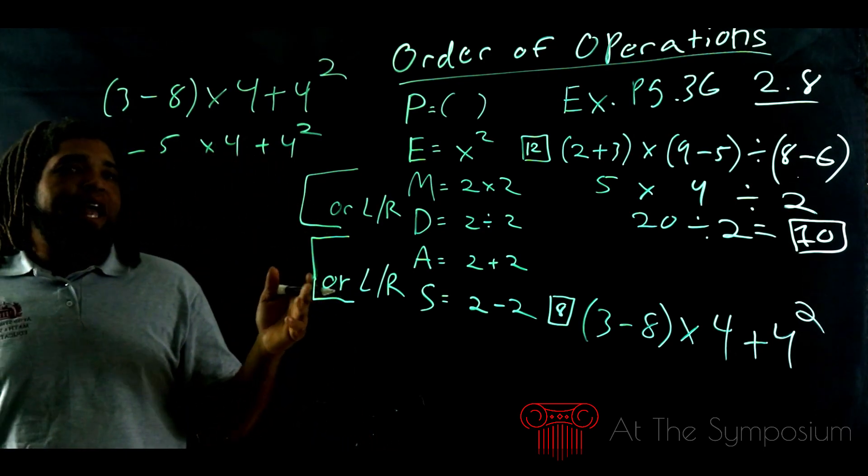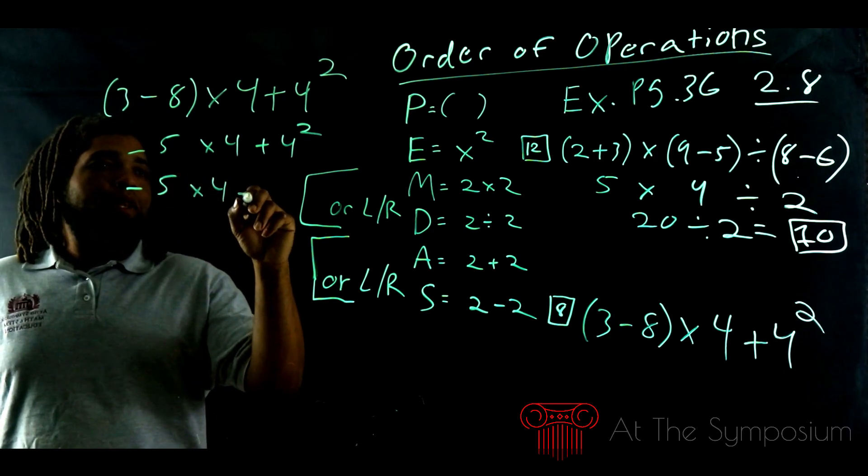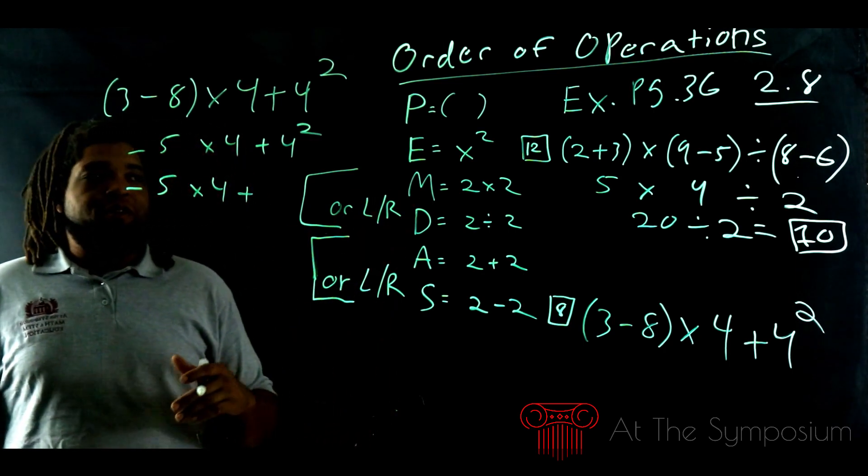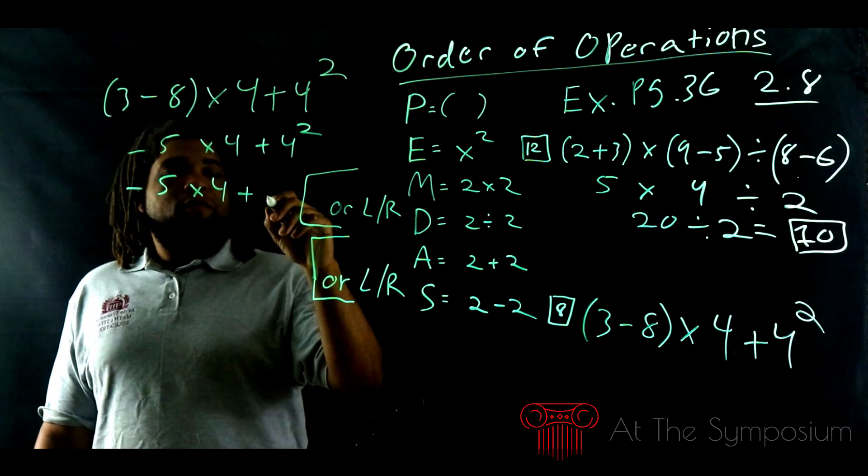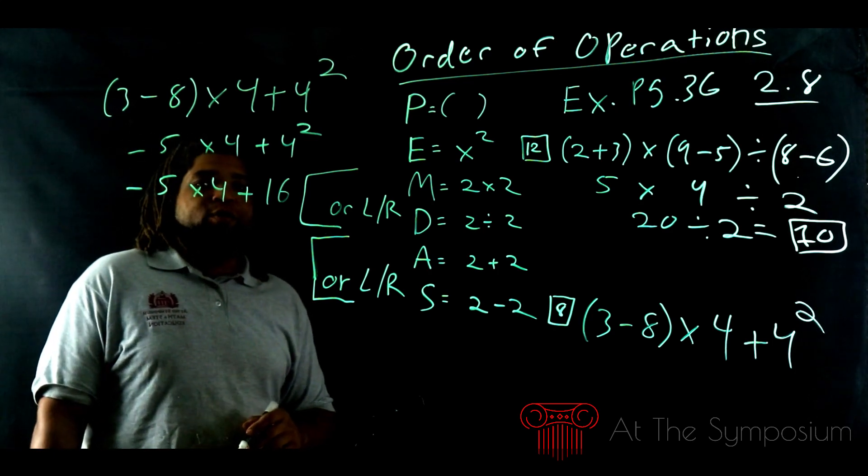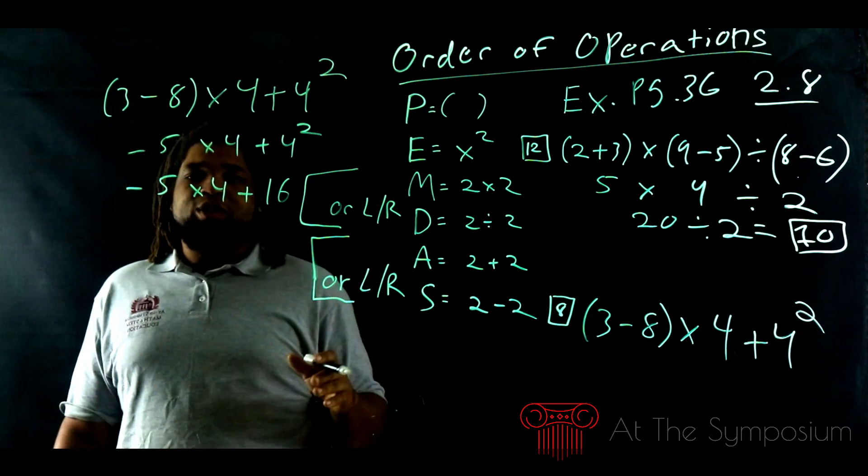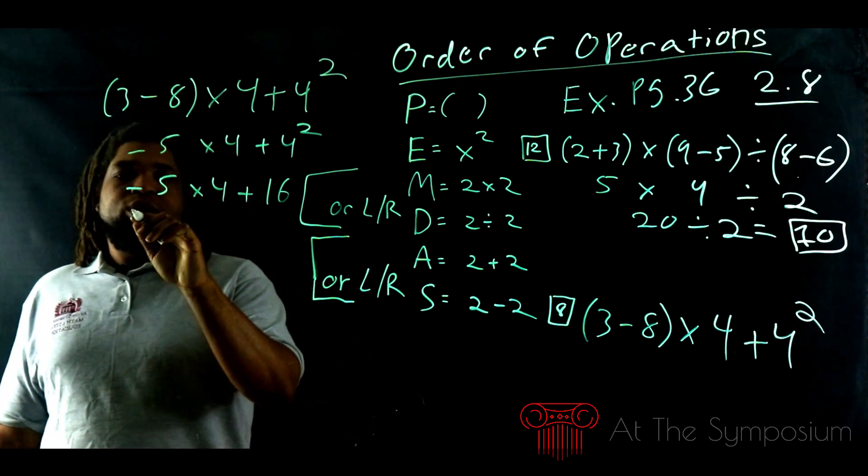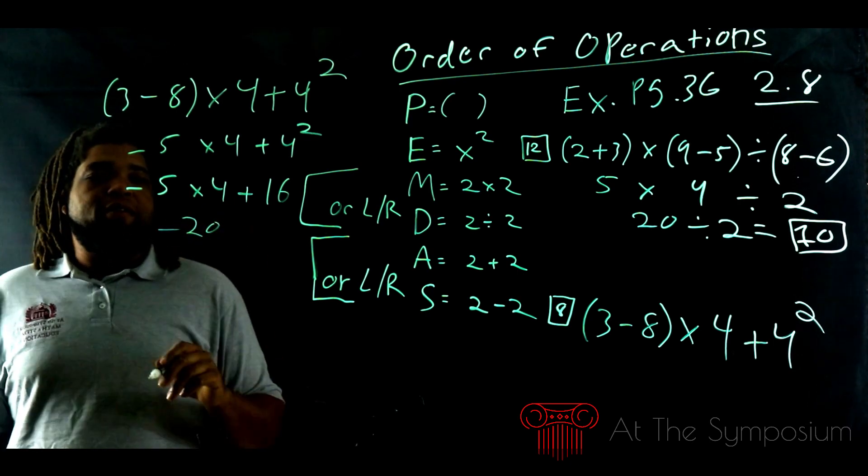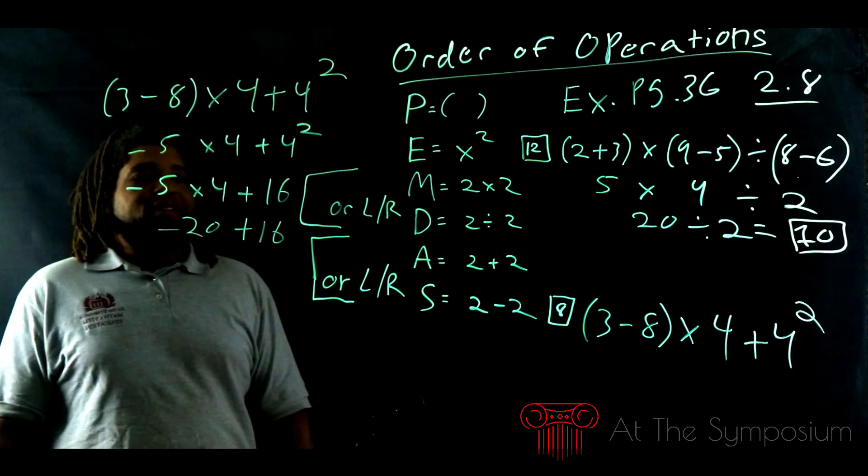We happen to have an exponent in this problem. We didn't have one in the last one, but we do now. So we're going to do negative 5 times 4 plus what's 4 to the fourth. So a square root is going to be multiplied by that number itself. So that's 4 times 4. 4 times 4 is going to give us 16. Now again, we're kind of in the same situation. We've got to figure out multiplication, division, addition, and subtraction. We multiply from left to right. So multiplication comes first. So we do negative 20. Negative 5 times 4 is negative 20 plus 16.